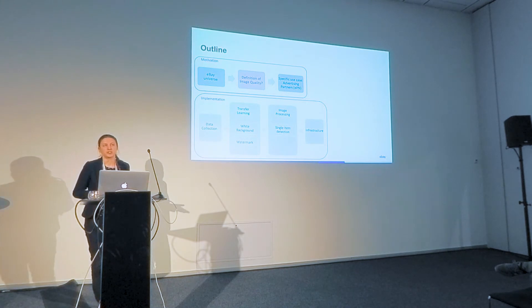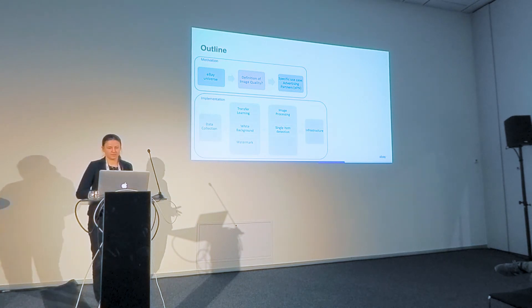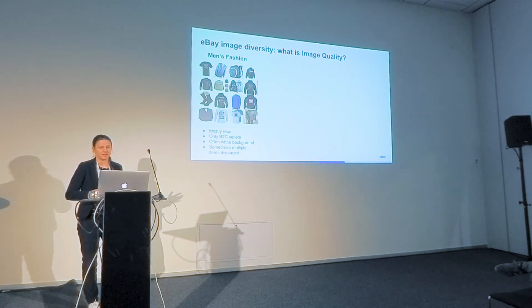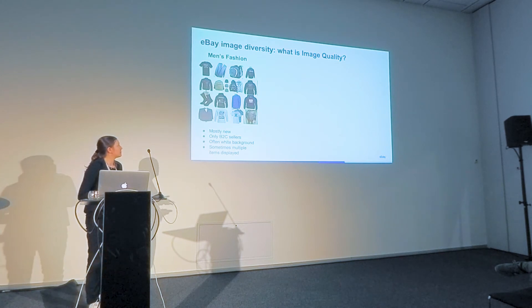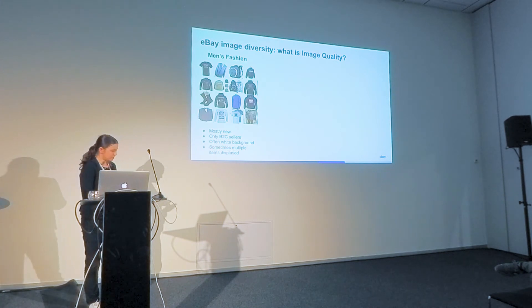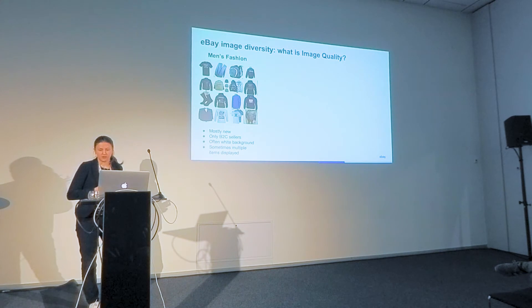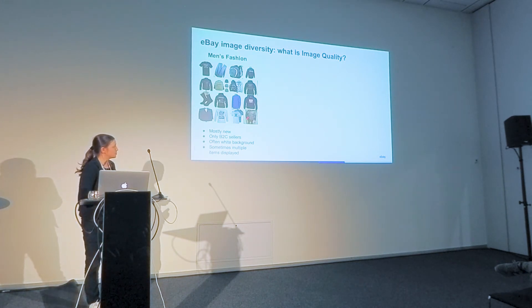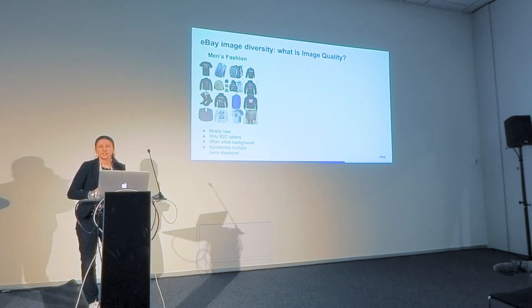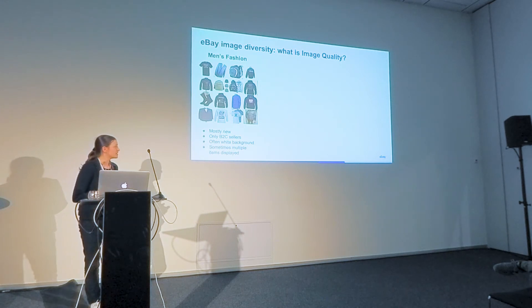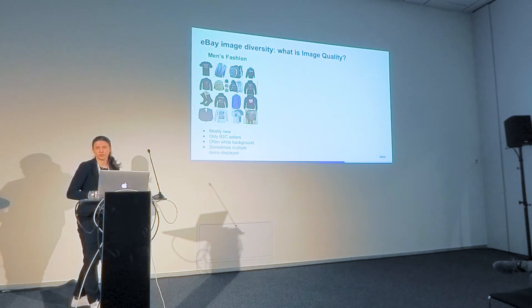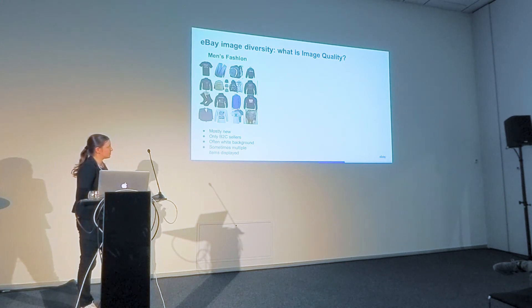Given this diversity, how can we even define what a 'good' image is? Looking closer at one category — men's fashion — which has several subcategories like t-shirts and handbags, we see that most item images have white backgrounds. Everything here except one image has a white background, likely because most items in this category are sold by professional B2C sellers and most items are new.